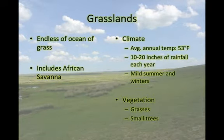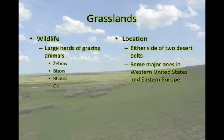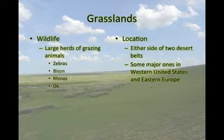The next terrestrial biome is the grasslands. The grasslands are known for being an endless ocean of grass. The African savanna is also included in the grasslands. The average annual temperature of the grasslands is about 53 degrees Fahrenheit. The grasslands receive about 10 to 20 inches of rainfall each year. The grasslands have mild summers and winters. The majority of the vegetation consists of grasses or small trees. The majority of the wildlife consists of large herds of grazing animals, such as zebras, bisons, rhinos, or ox. The grasslands can be found on either side of the two desert belts, with major grasslands in the western United States and eastern Europe.